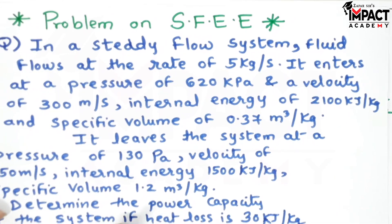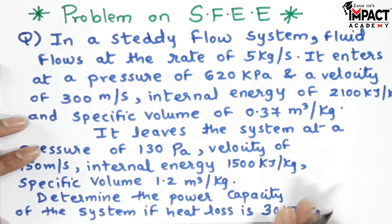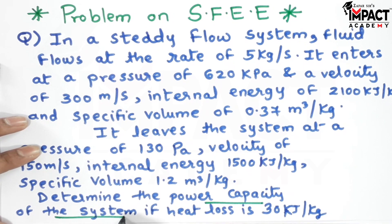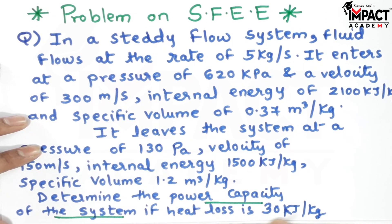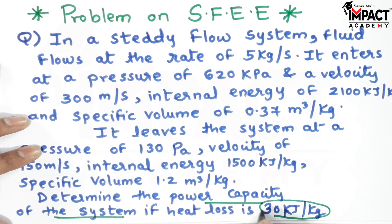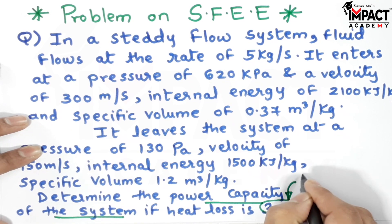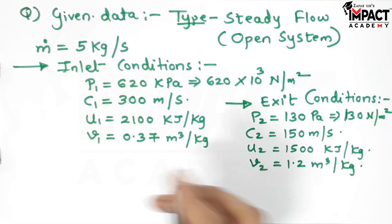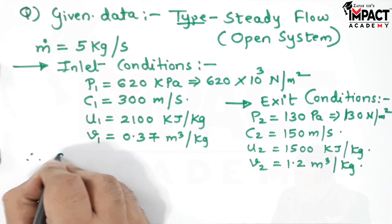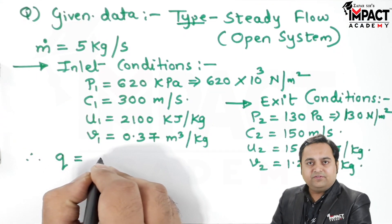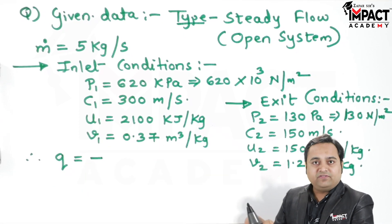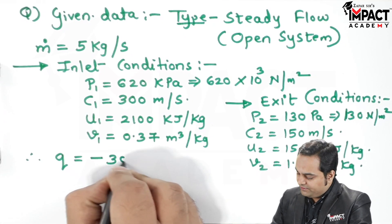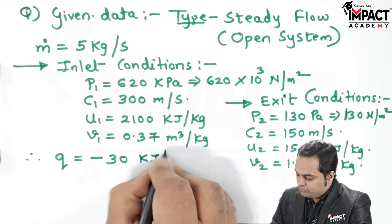We need to determine the power capacity of the system. The heat loss is given as 30 kilo Joule per kg, which is in per kg form so it is denoted by small q. Since it is a heat loss it is written with a negative sign, so small q equals minus 30 kilo Joule per kg.